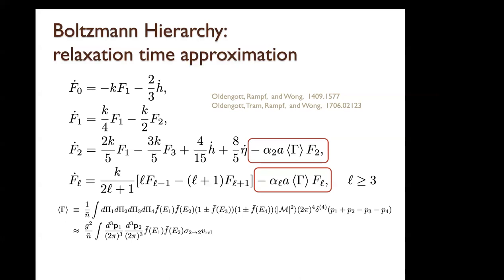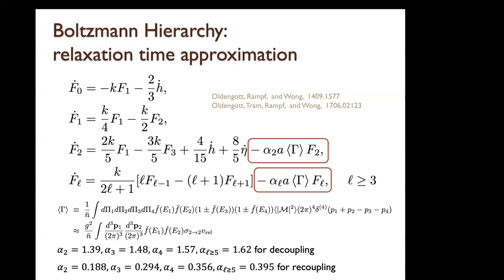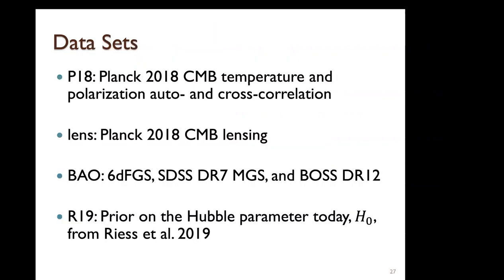For the same kind of γ (same temperature dependence), we found a universal relaxation time coefficient: for the decoupling mode where γ ∝ T⁵, and for the recoupling mode where γ ∝ T. The dataset used: P18 is Planck 2018 data, lens is CMB lensing from Planck 15, BAO data, and R19 is a supernova measurement from Riess et al. 2019. Using this dataset, we tested whether the crash paper's claim holds.